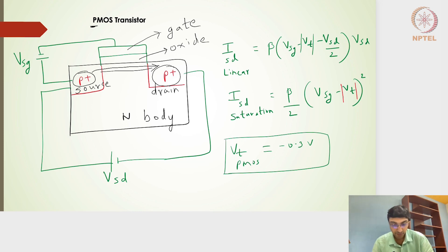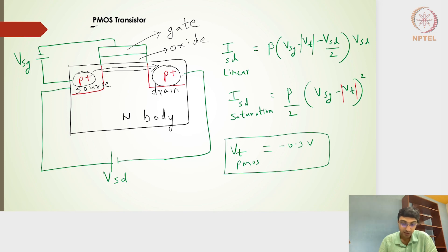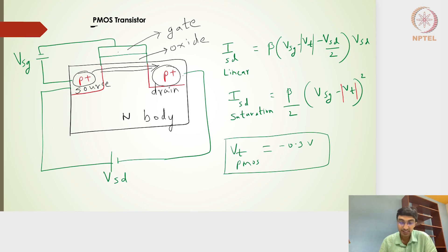To get current, we need a voltage source applied. The potential difference is applied across drain to source, and also between gate to source — very similar to the NMOS transistor. The source is always kept at a higher potential than the gate, and also at a higher potential than the drain. The majority carriers flow from source to drain.